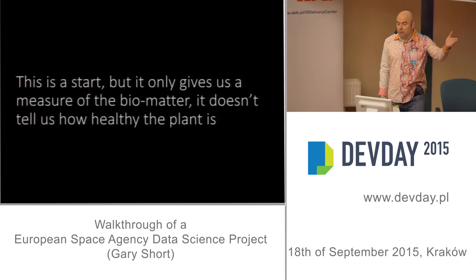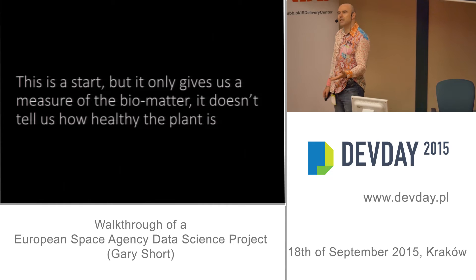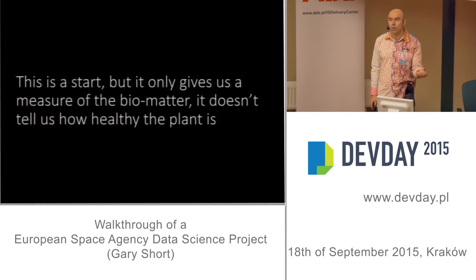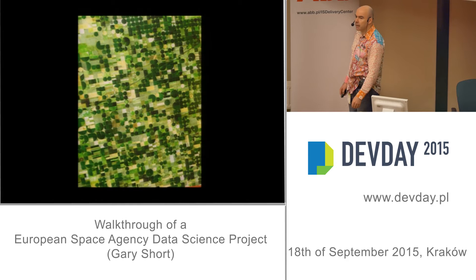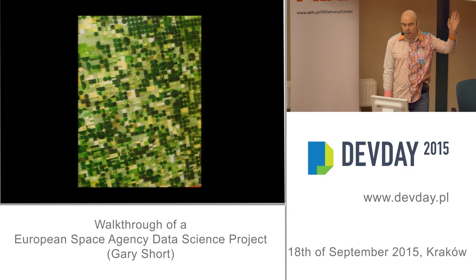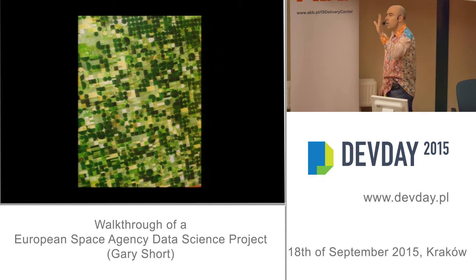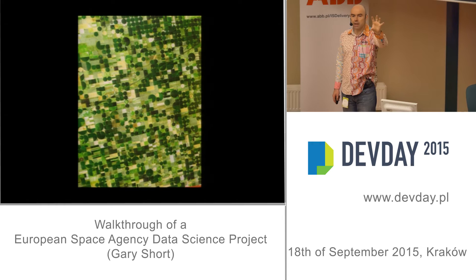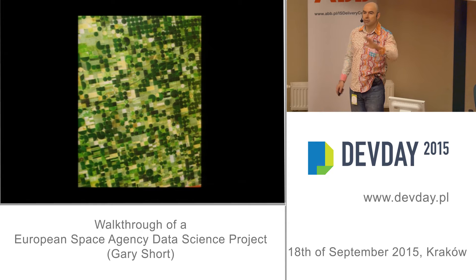That's a start, but it doesn't give us the whole story. It doesn't really tell us about crop health — it just gives a measure of biomass. We need more. Here is a satellite image of arable land in the US. Two things struck me: it's very patchwork, with areas of dark green and patches that appear almost white. It's all vegetation, but just measuring biomass doesn't tell us what's healthy.